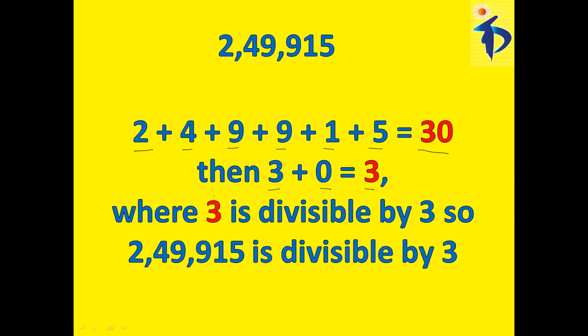We know that 3 is obviously divisible by 3 because it is a multiple of 3. That means we can say that 2,49,915 is divisible by 3.